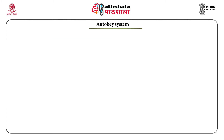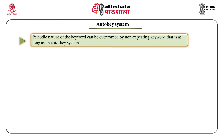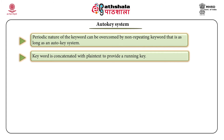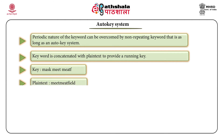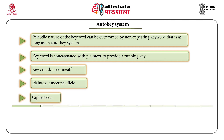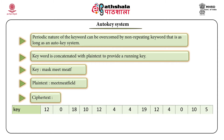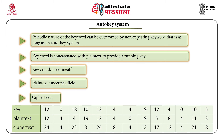The solution is the auto key system. What we want to overcome is the periodic nature of the keyword — we want a non-repeating keyword. The key should be as long as the plain text. The key is concatenated by the plain text to achieve randomness, giving us a running key. So, with key 'mask', instead of repeating 'mask', we append the plain text — making the key 'mask meet me atf', which equals the full length of the plain text. The formula is the same: add key to plain text to get ciphertext, applying modulo 26 if greater than 25.